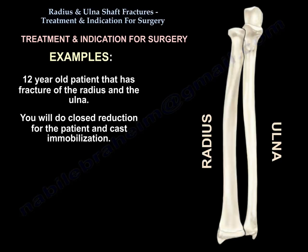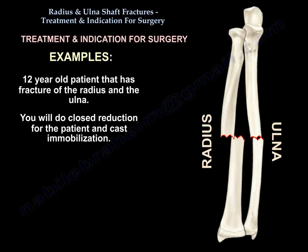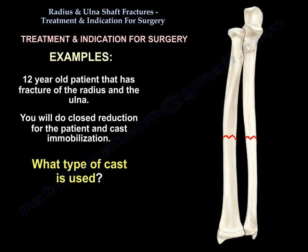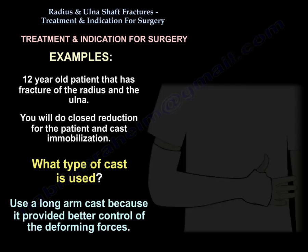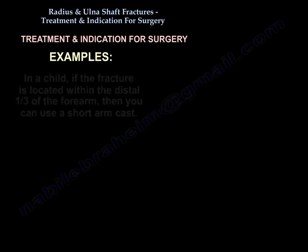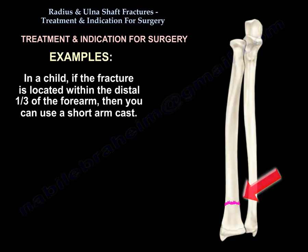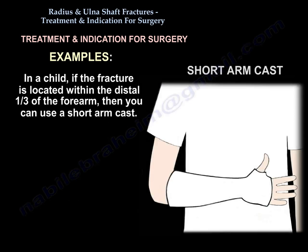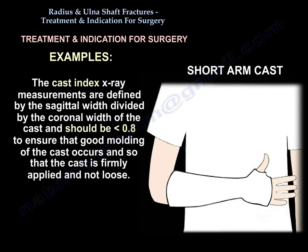Here is a case of a 12-year-old patient with a fracture of the radius and ulna. You will do closed reduction and cast immobilization. Use a long arm cast because it provides better control of the deforming forces. In a child, if the fracture is located within the distal third of the forearm, you can use a short arm cast. The cast index — defined by the sagittal width divided by the coronal width of the cast — should be less than 0.8 to ensure good molding and a firmly applied cast.